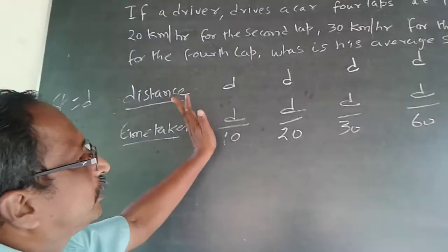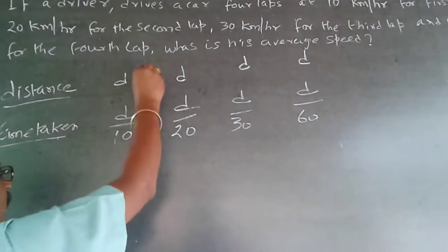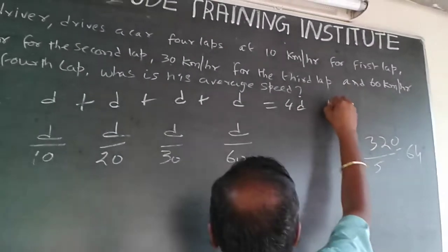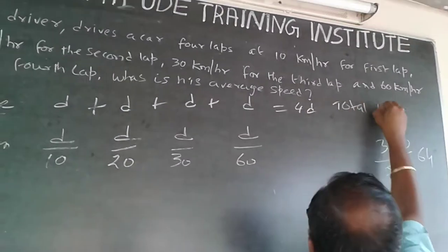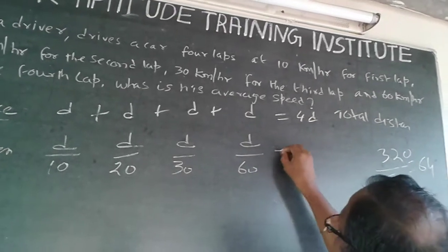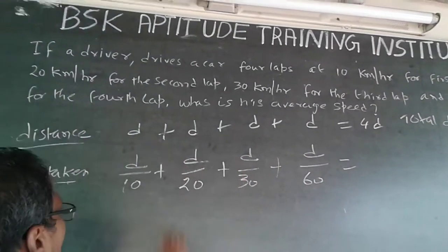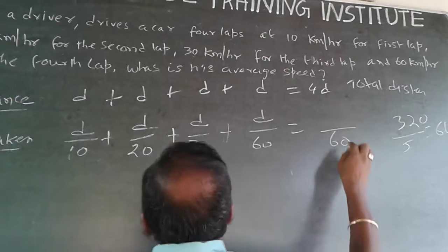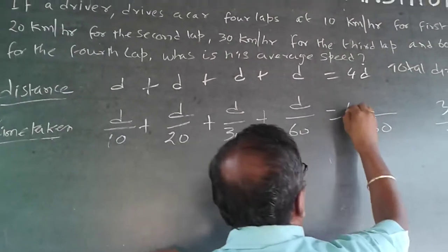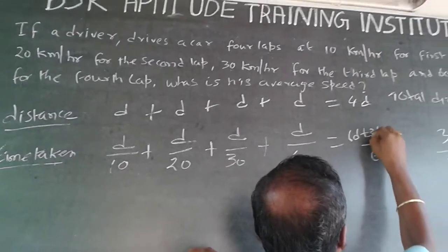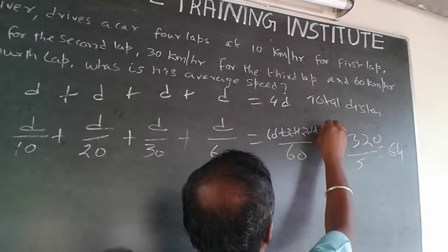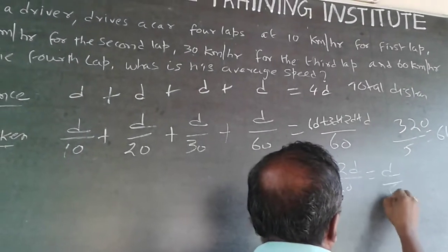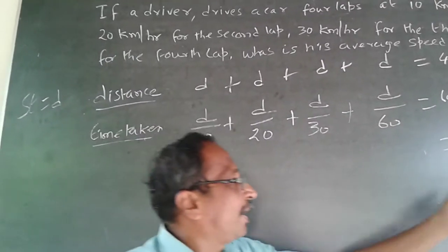Total distance travelled = D + D + D + D = 4D. Total time taken = D/10 + D/20 + D/30 + D/60. Using LCM of 60: this becomes 6D/60 + 3D/60 + 2D/60 + D/60 = 12D/60 = D/5. So total time = D/5.